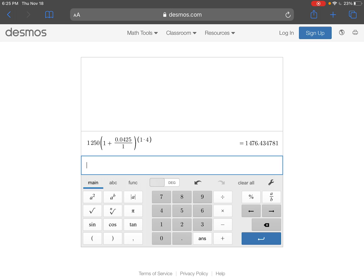I get 1,476.434781. How many decimal places does money have? Two. So we have to round to the nearest hundredth because we're talking about this in terms of money. So in terms of dollars and cents. And so I have to round to two decimal places. To round to two decimal places, you look at the third decimal spot.